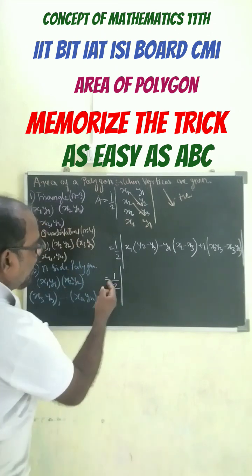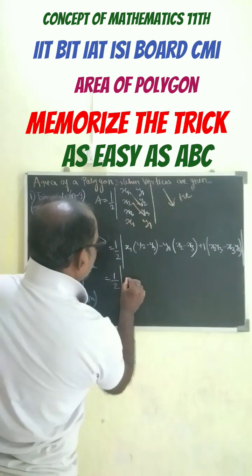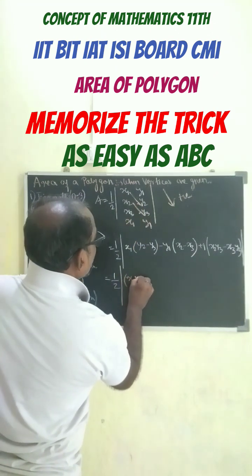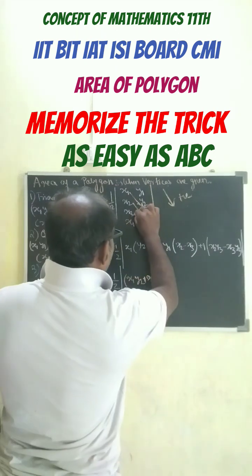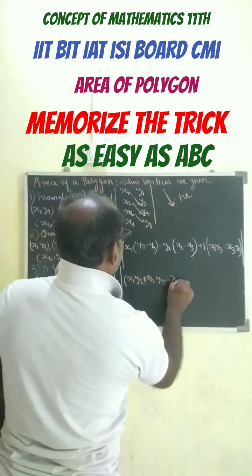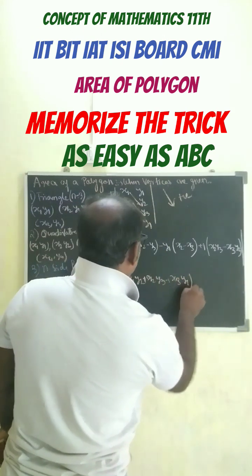So what we have is here: half into x1, y2 plus x2, y3 plus x3, y1.